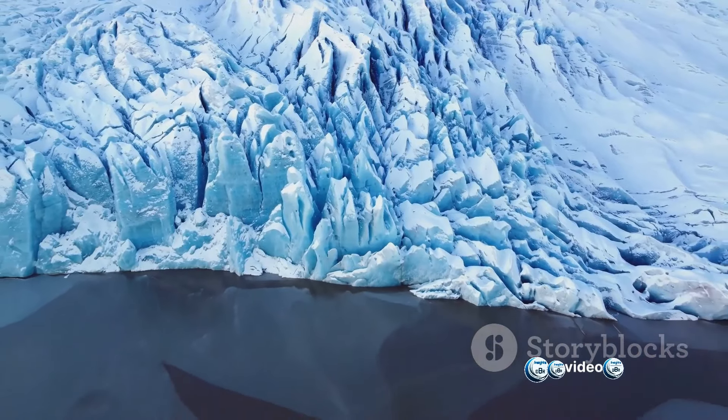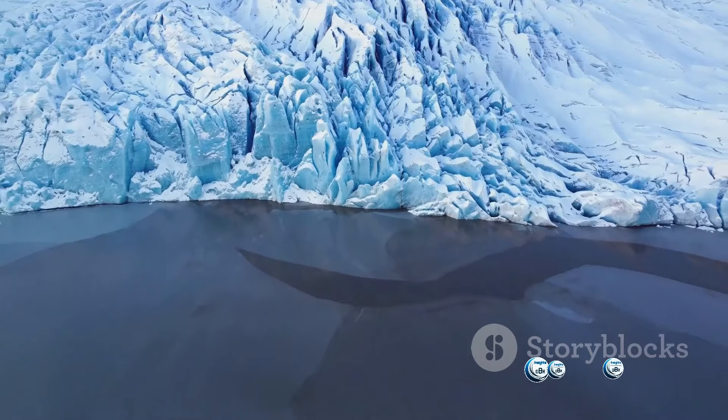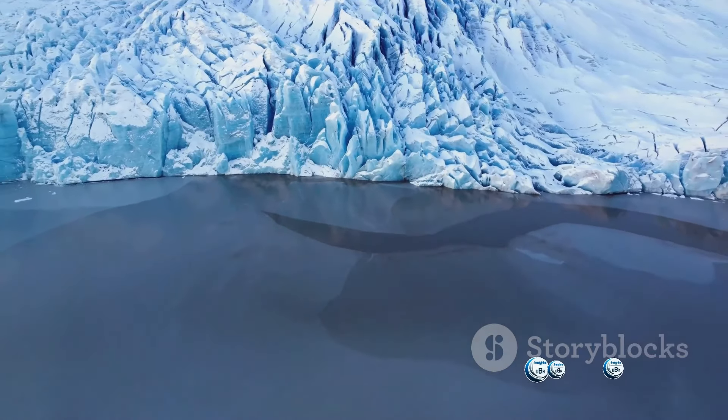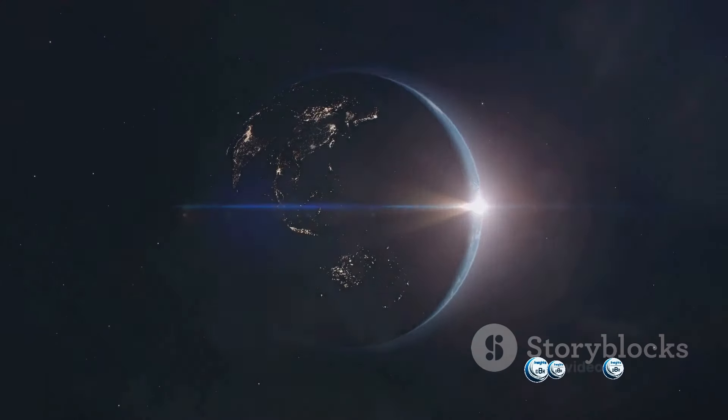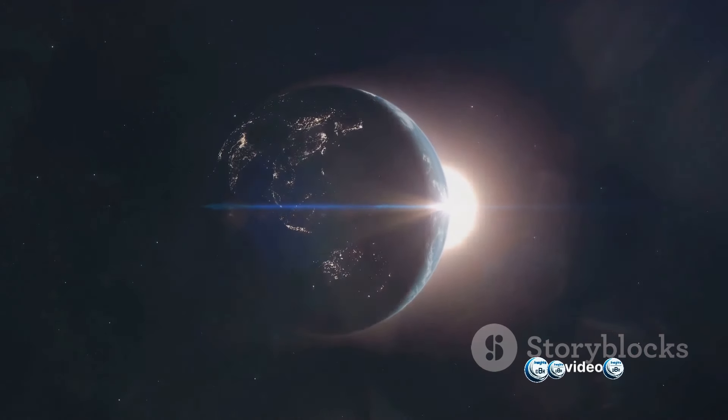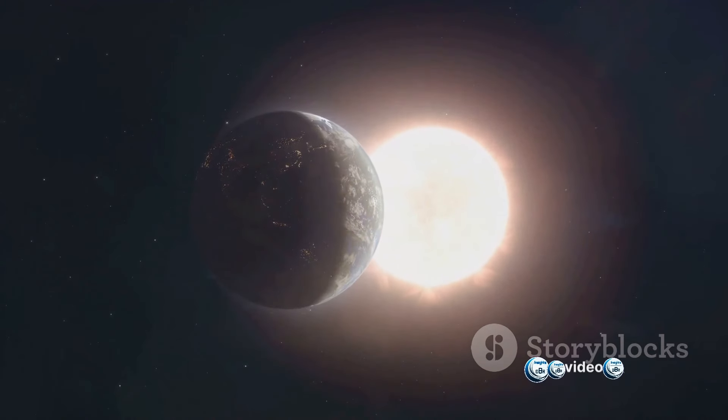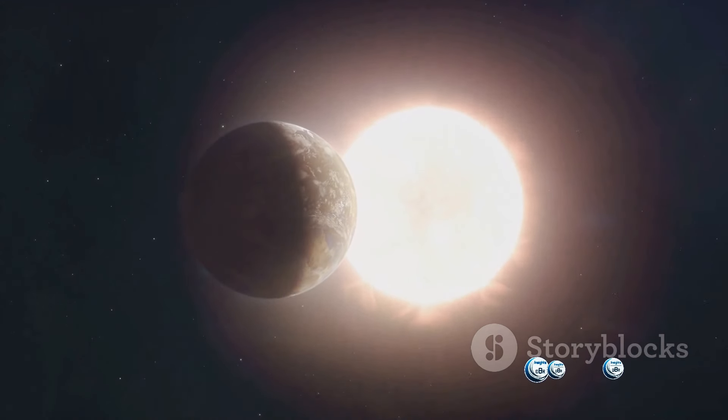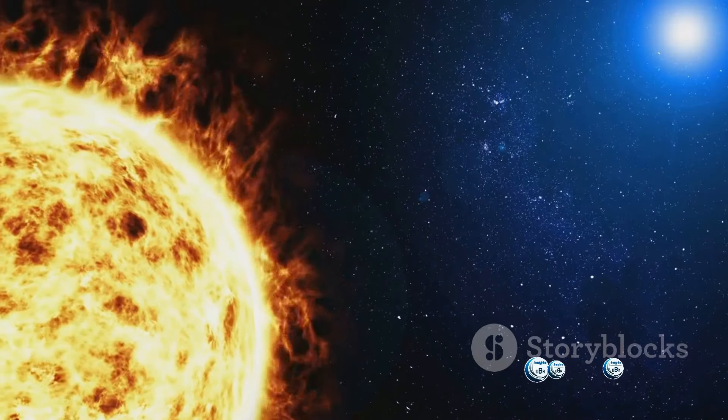If the Sun's luminosity continues to increase, Earth could eventually experience a runaway greenhouse effect, where the planet becomes so hot that it's uninhabitable for most forms of life. But that's not the end of the story. In about 5 billion years, the Sun will run out of hydrogen fuel in its core. When this happens, the Sun will expand into a red giant, engulfing the inner planets, including potentially Earth.